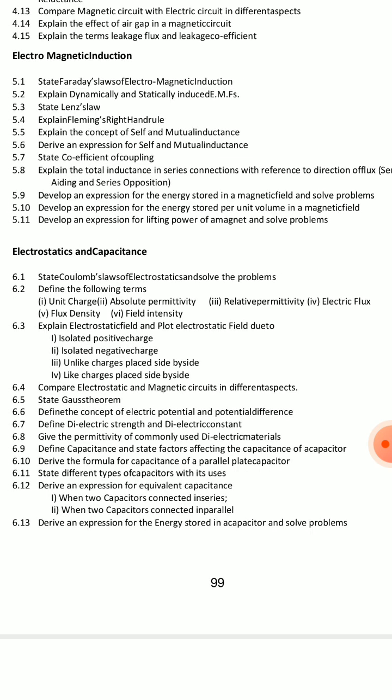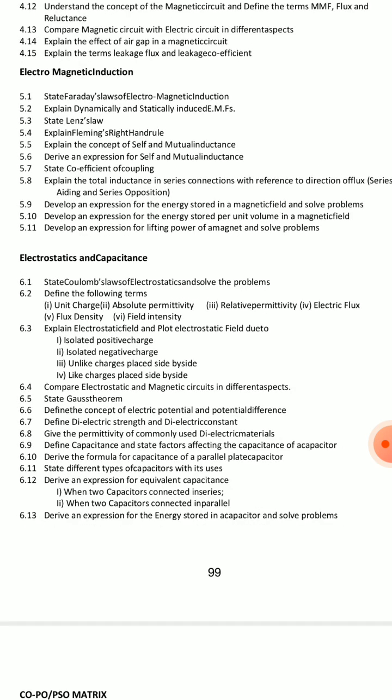Cover absolute permittivity and relative permittivity — choose 2. Then cover electric flux and flux density — these are definitions. State Coulomb's law of electrostatics. For short answers, cover Gauss's theorem, state electrostatics laws, and 4 definitions. You can choose 3 to 4 shorts and 4 essays.